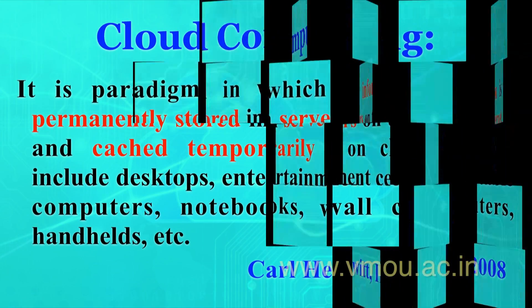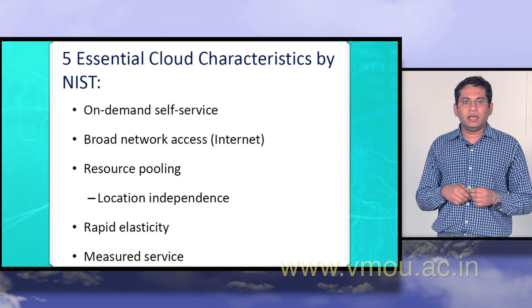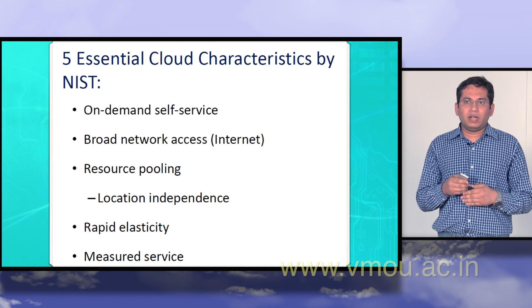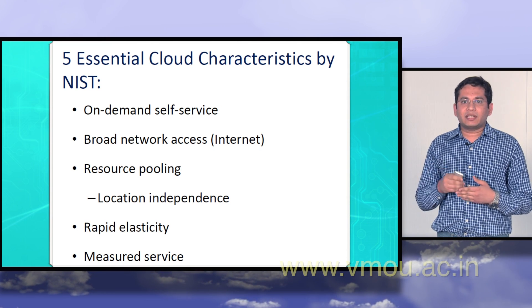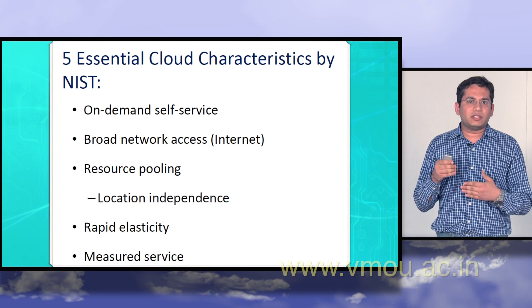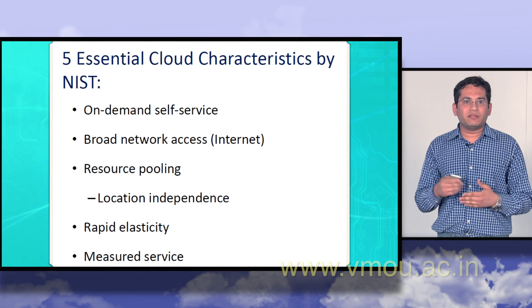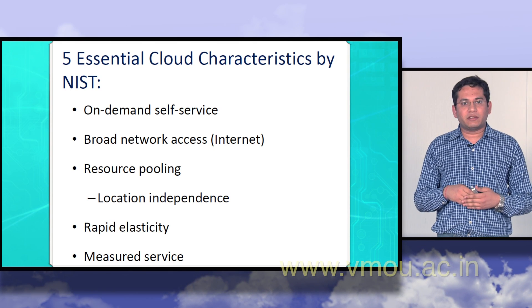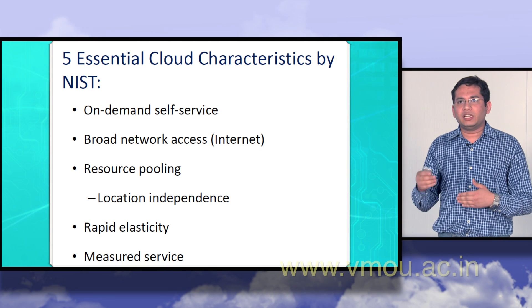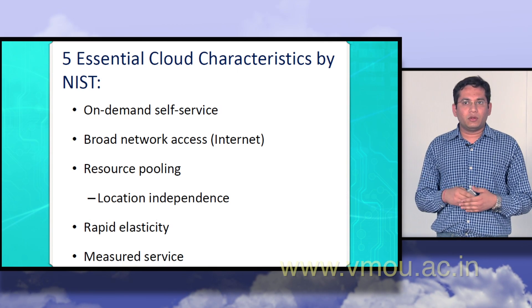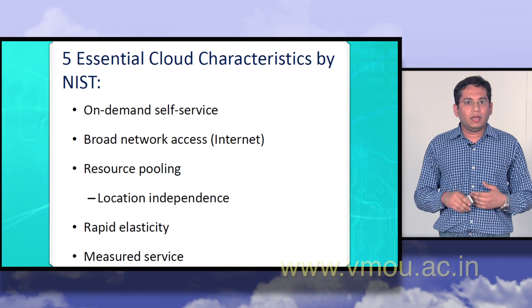When we talk about cloud, we have the 5 essential cloud characteristics given by NIST that every cloud should possess. First is on-demand self service — whenever we need cloud services we should get those services. Second is broad network access through internet, because if you want to avail cloud services you need a decent internet connection; a low bandwidth DSL connection will not suffice. Third is resource pooling, which means location independence. Fourth is rapid elasticity — if you want to crunch more data you can add servers. Fifth is measured services — based on your usage you will be charged.